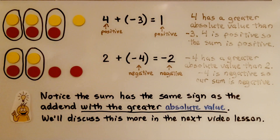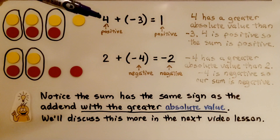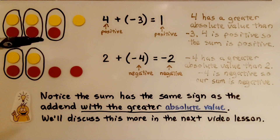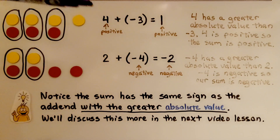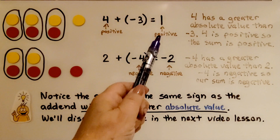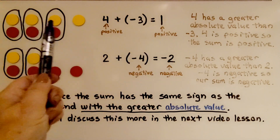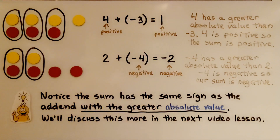Here we're adding positive four to negative three. We have four yellow counters for positive four and three red counters for negative three. Four has a greater absolute value than negative three — four is farther from zero. And since four is positive, our sum is positive. There are more positive counters, so our sum is positive.